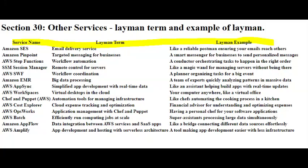AWS Batch — Efficiently Running Computing Jobs at Scale. It functions like super assistants handling large data processing tasks simultaneously, improving efficiency.